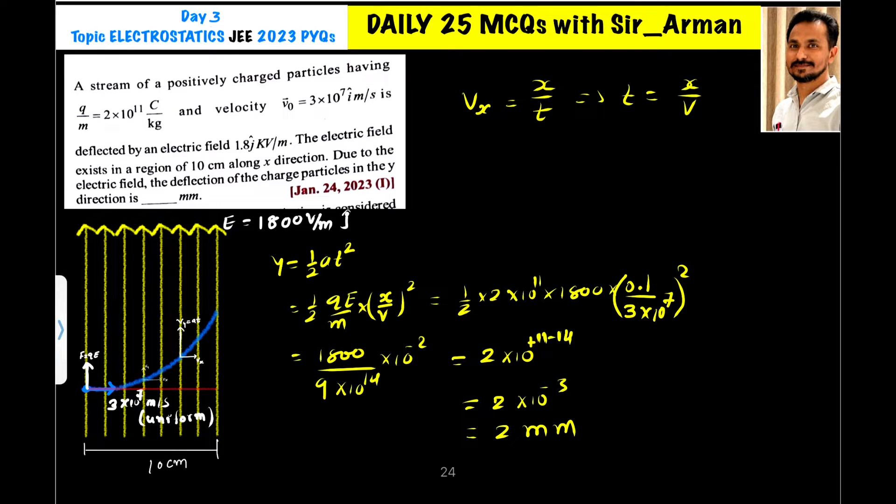A stream of positively charged particles having charge to mass ratio 2 into 10 raise to 11 coulomb per kg and velocity 3 into 10 raise to 7 i cap meter per second is deflected by an electric field 1.8 j cap kilovolt per meter. It means we have fired a charge particle in the x direction with a velocity 3 into 10 raise to 7 meter per second.